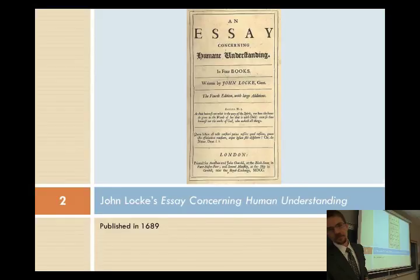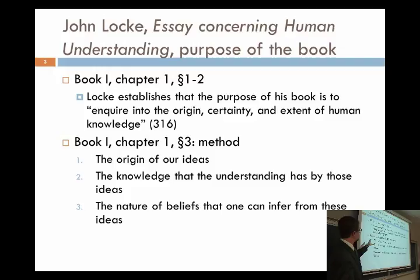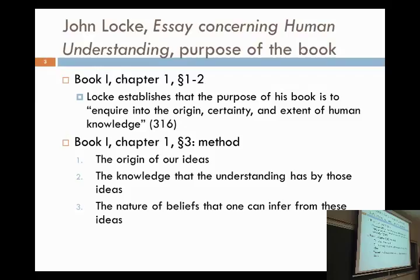So in Book One, Chapter One, sections one and two, Locke tells us what he's up to in this essay. The goal of it is to inquire into the origin, the certainty, and the extent of human knowledge. First, he wants to talk about where do we get our ideas from, where do they originate? Secondly, he wants to understand the knowledge that the understanding has by those ideas. And third, the nature of beliefs that one can infer from these ideas.